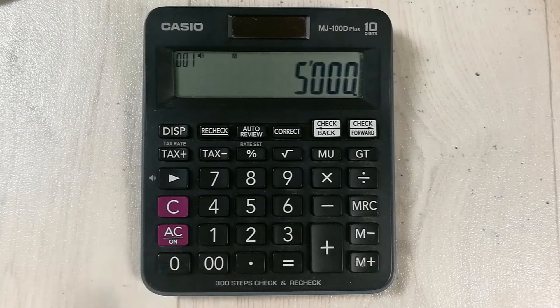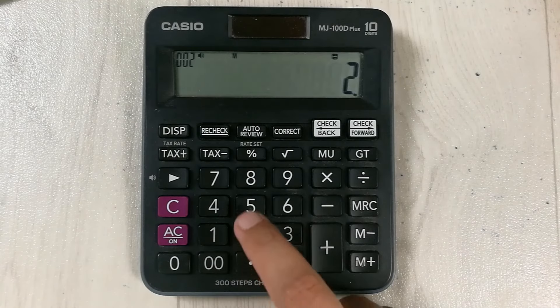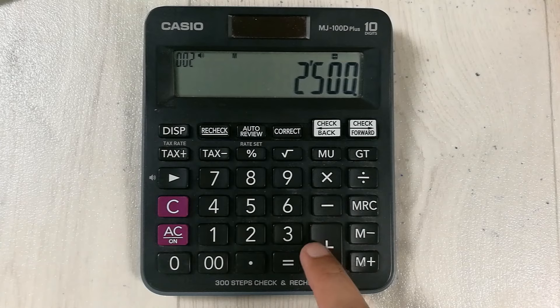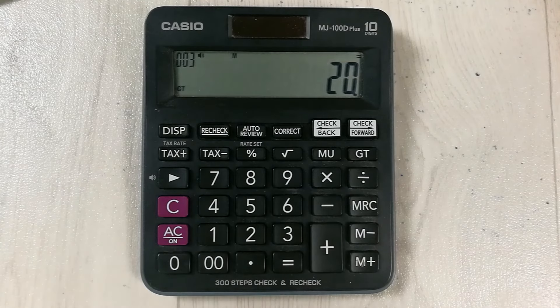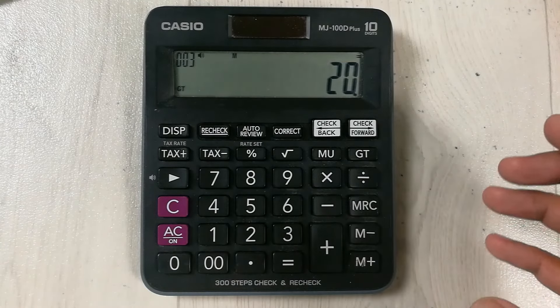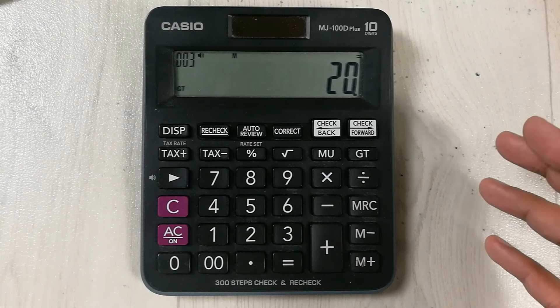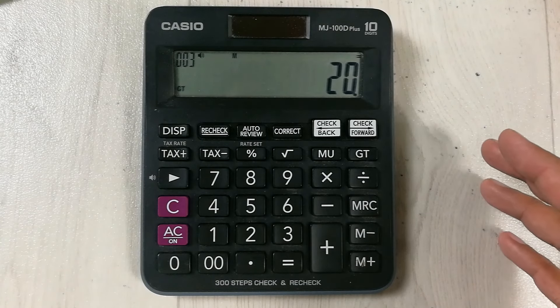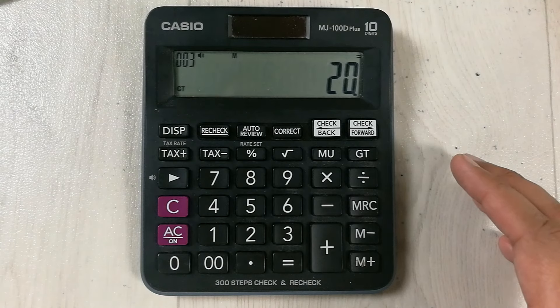So here is our answer. So 20 dollars or 20 rupees is the sales per square foot. This is how you can calculate the sales per square foot on your calculator.